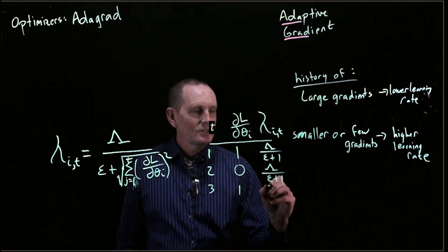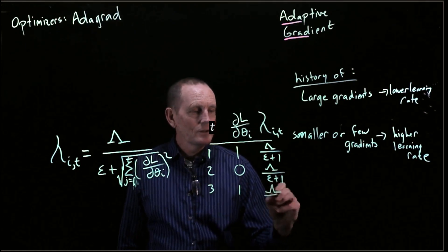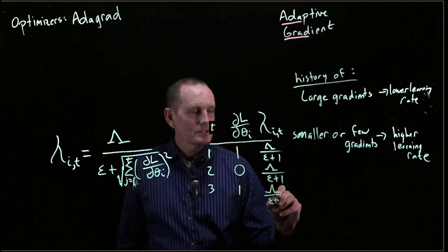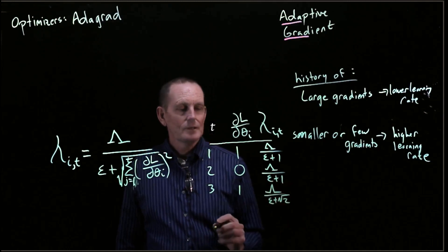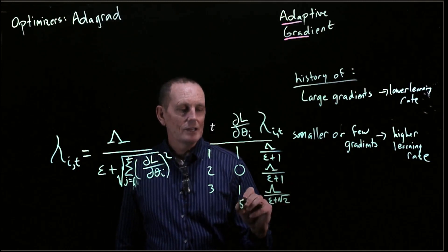We'll take the square root. So now we have lambda over epsilon plus square root of 2. And if we now have, let's say a 5,